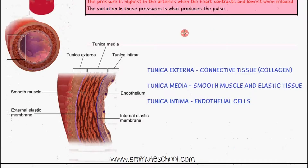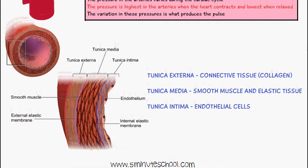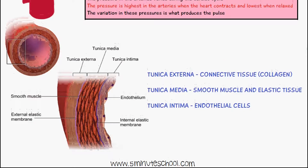I've included this diagram here which shows you the cross section. This central part is called the lumen, which is where the blood flows through, and we have three separate layers. We have the tunica externa, which is this region here, and this consists of connective tissue or collagen fibers.